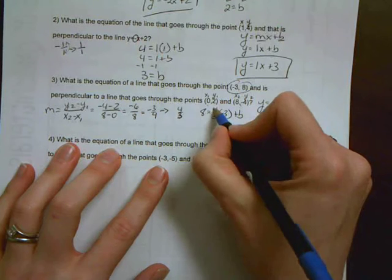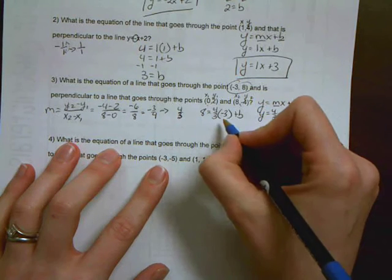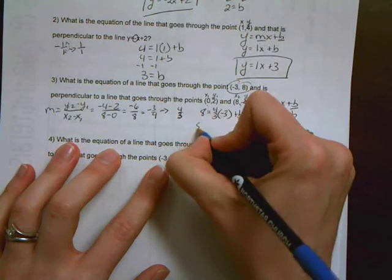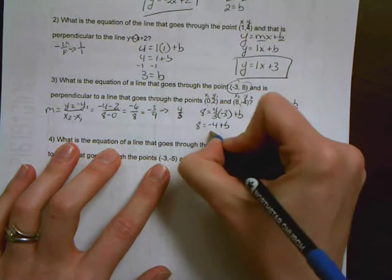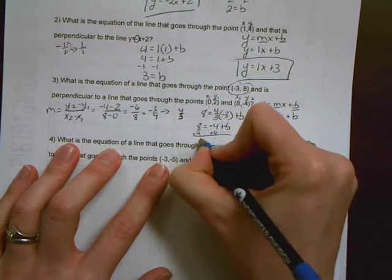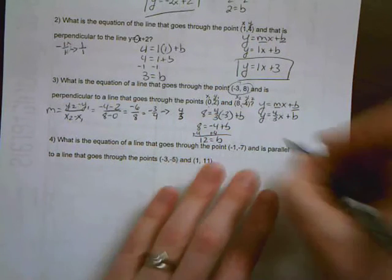When I solve that, four-thirds times negative 3, you would multiply four times negative 3 and get negative 12, divided by 3 is negative 4, plus b. And now I'm going to add 4 to both sides, and I get 12 equals b.